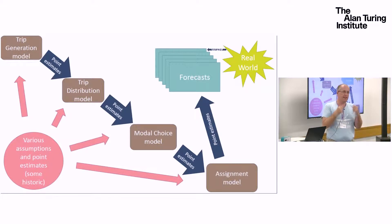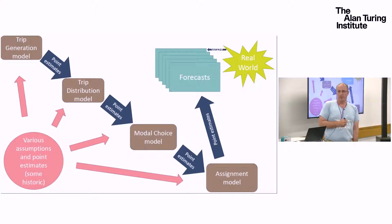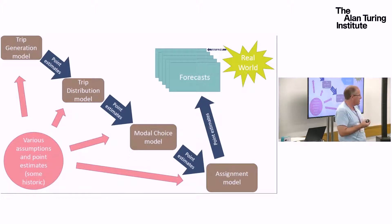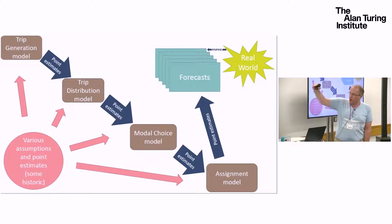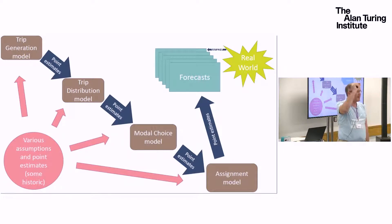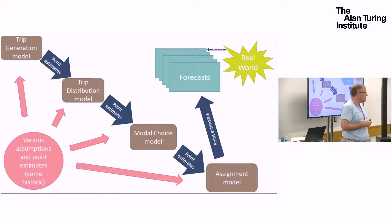If that comparison is okay, you think the model's great and you now believe you can forecast what's going to happen in 40 years' time. What I'm trying to highlight is that the current way of doing transport modelling — it's a regulatory thing, something you have to do to a certain standard set out by the DfT — at every step there's modelling going on, and yet there are only point estimates communicated from one step to the next. Goodness knows what aggregation biases existed before we got the point estimate, but we're certainly losing all the variability.